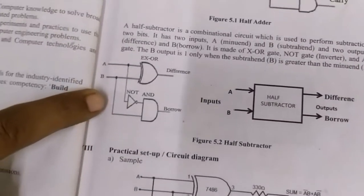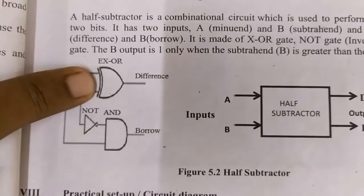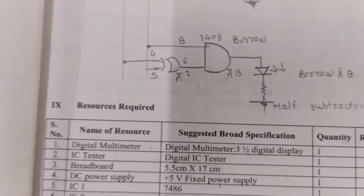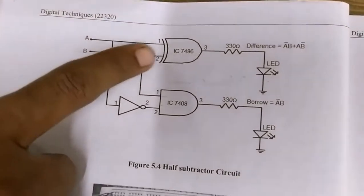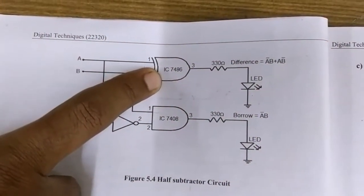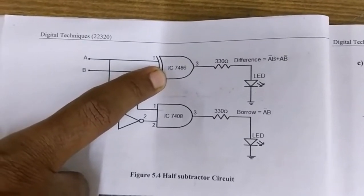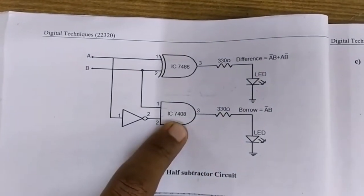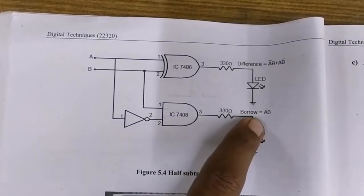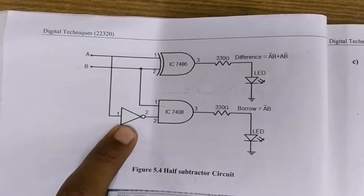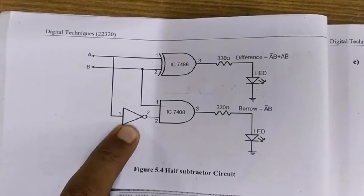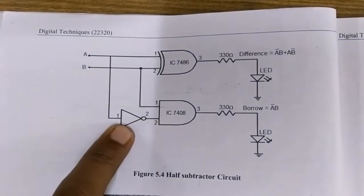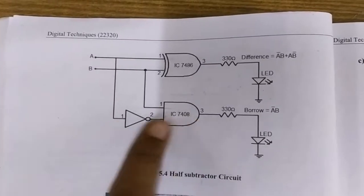The hardware requirements include one XOR gate, one NOT gate, and one AND gate. IC 7486 is used to generate the difference, IC 7408 is used to generate the borrow, and it requires the help of IC 7404, which is the NOT gate. So in short, three different ICs are required: 7486 for the difference, 7408 and 7404 together for the borrow.